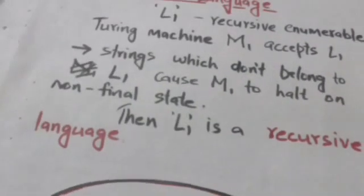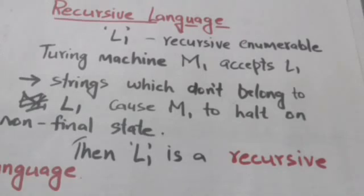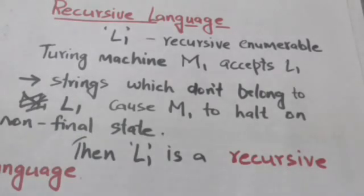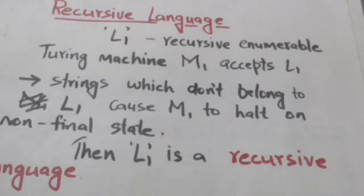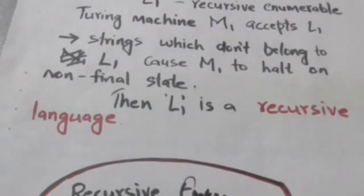Now we will study about recursive language. Suppose there is a recursive enumerable language L1 and a Turing machine M1 which accepts L1, and all strings of input symbols which do not belong to language L1 cause Turing machine M1 to halt on some non-final state. Then language L1 is a recursive language.